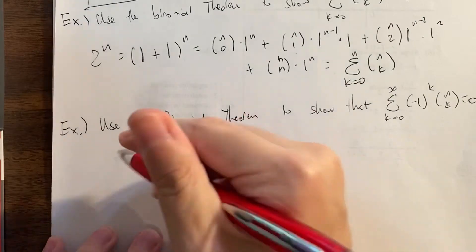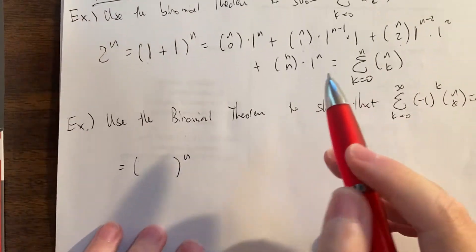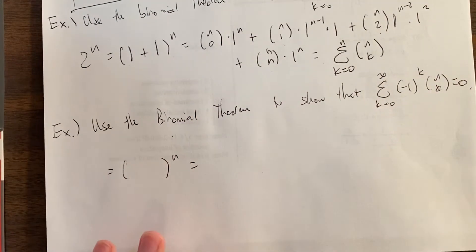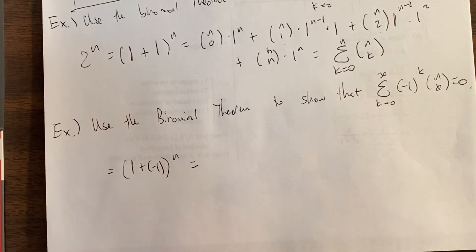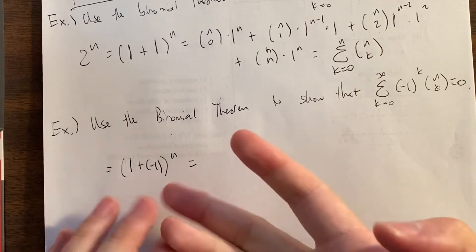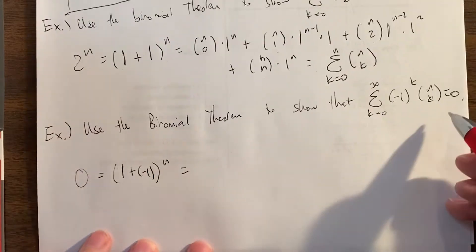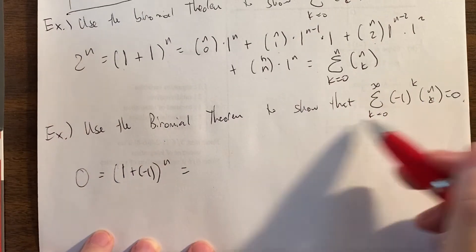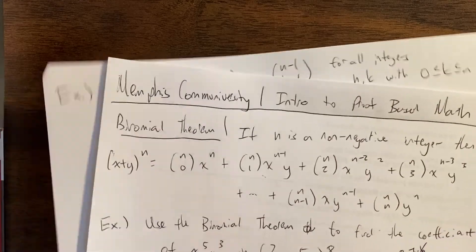We're going to expand (something) to the n and hope it equals 0. We'll use 1s and negative 1s, since we know what those powers are. So it's going to be (1 + negative 1) to the n, or (1 minus 1) to the n. I know this because 1 and negative 1 are numbers whose powers we know well. And (1 minus 1) to the n equals 0 to the n, which is 0 since n is finite — exactly what we want.